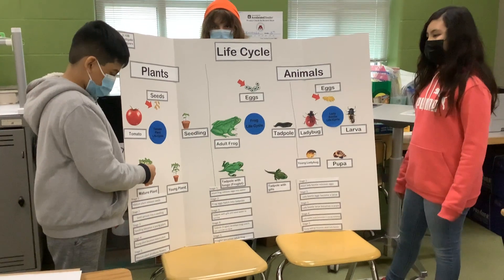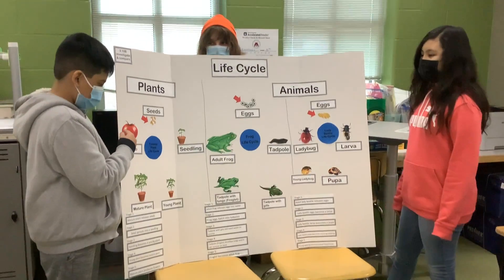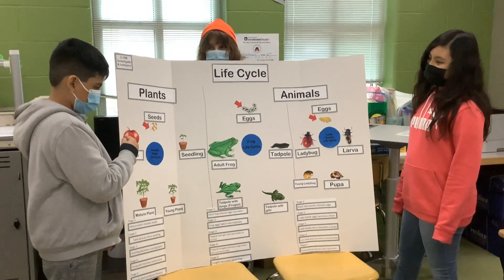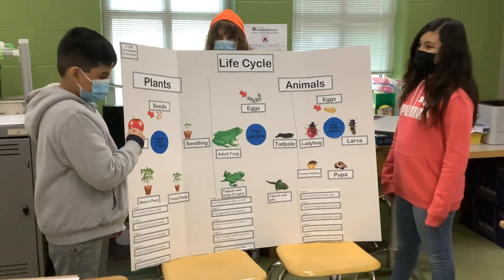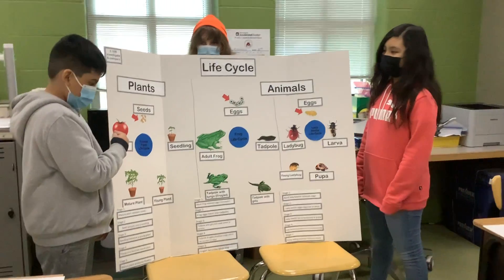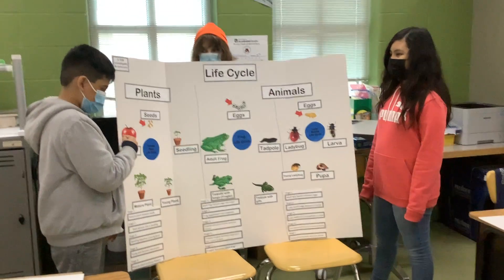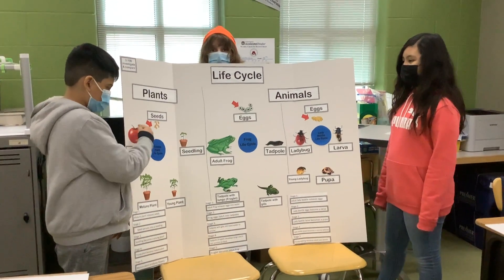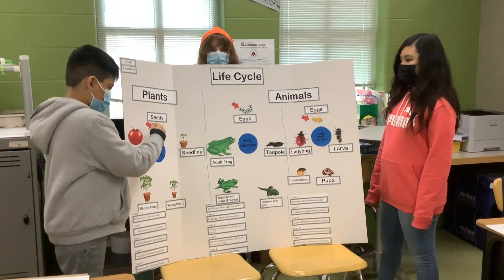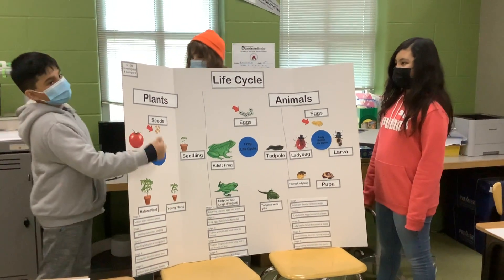A mature plant will grow flowers, and those flowers will turn into tomatoes. The tomatoes will have seeds inside, and once it decomposes, the seeds will come out and start off the cycle again.